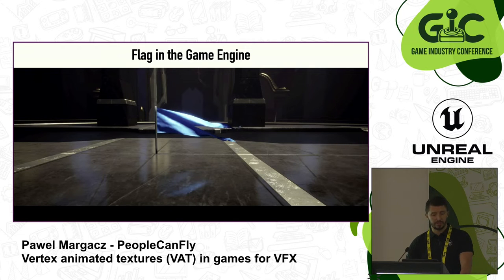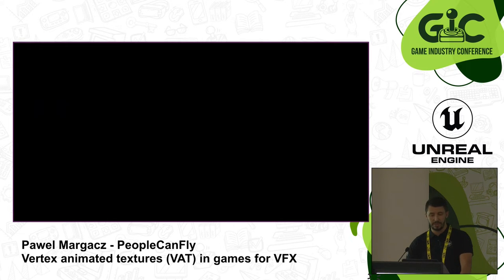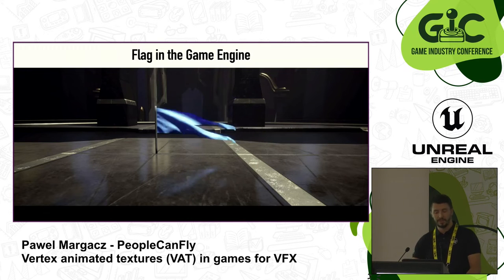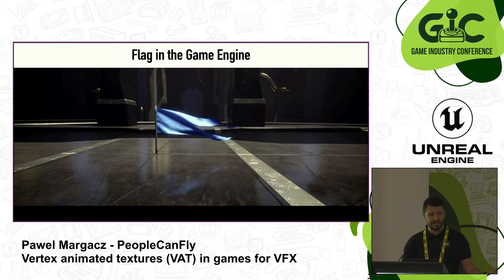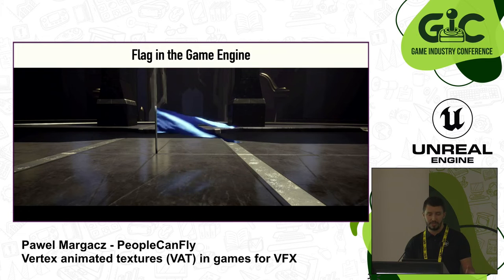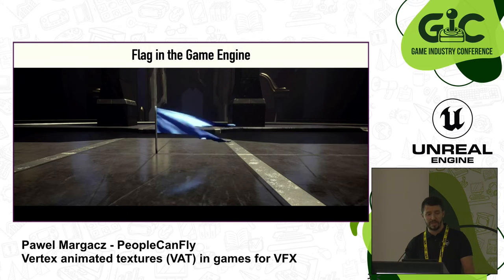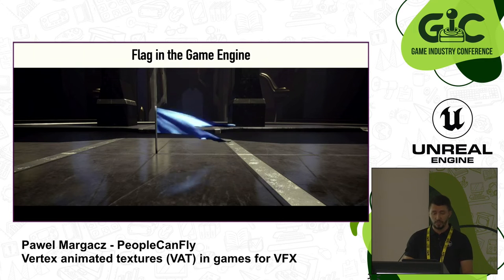This flag is a very simple VAT soft body animation — a loopable flag in the game engine. Because of its simplicity, we wanted to try transferring the animation into VATs and make it behave exactly like a simulation in Houdini. The whole process was straightforward, and after this test we started experimenting with more complex ideas, implementing it in Niagara using dynamic parameters. This animation is a loopable 100 frames and has two textures: a position map and a rotation map taken from Houdini.